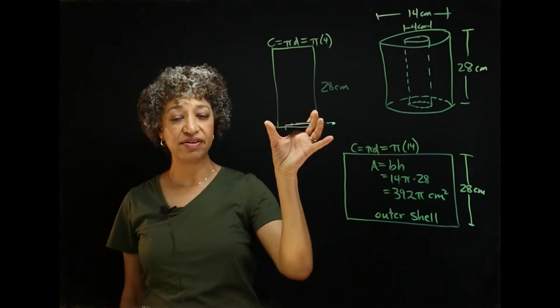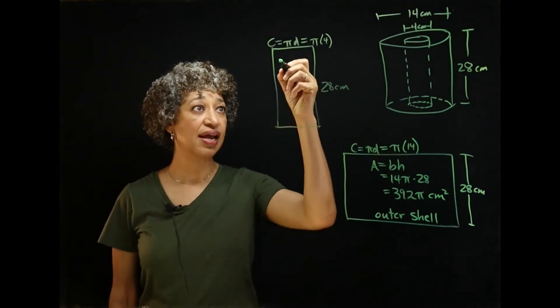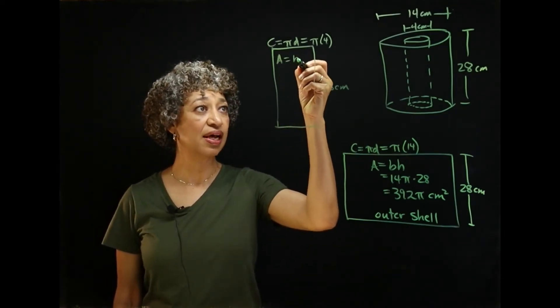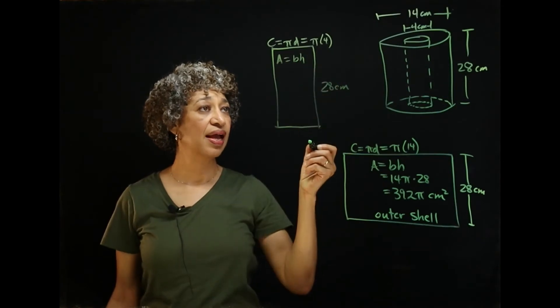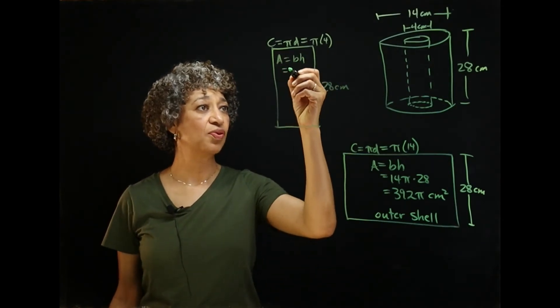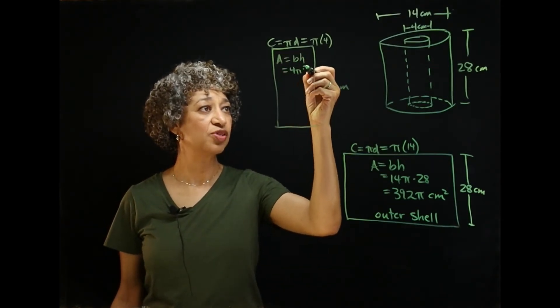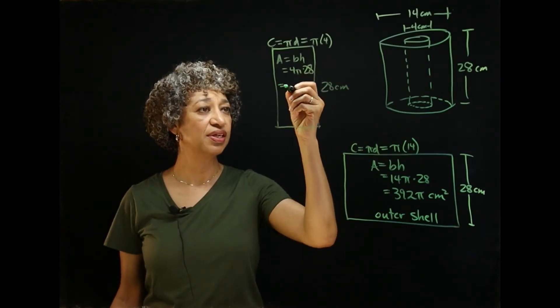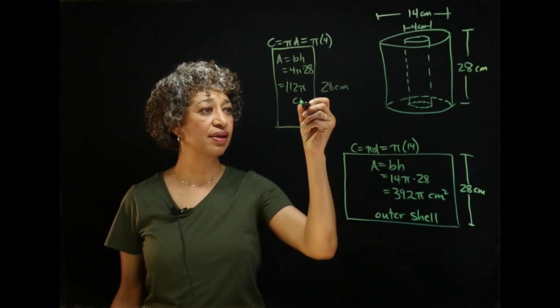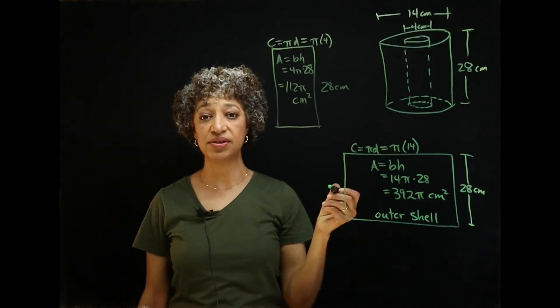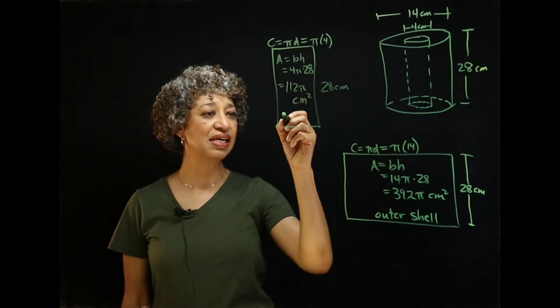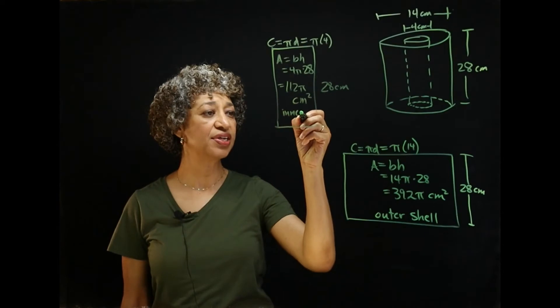So, then, we need to find the area of this small rectangle. Area is base times height. And that is 4 pi times 28, which is 112 pi square centimeters. So, this is the inner shell.